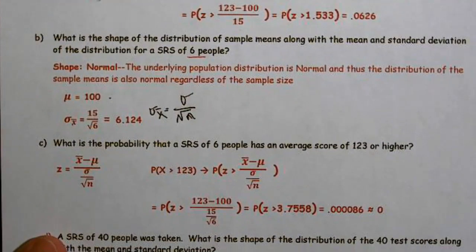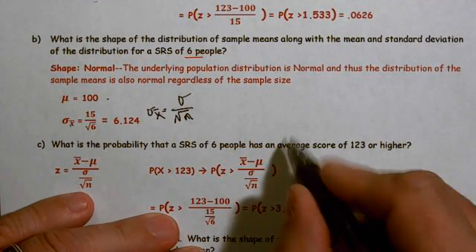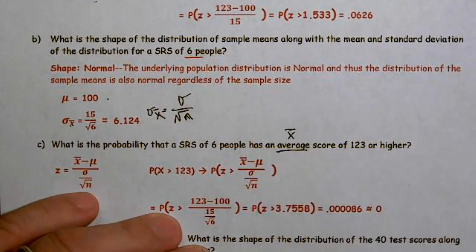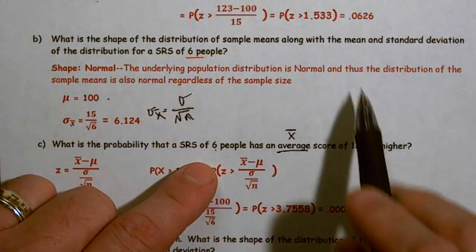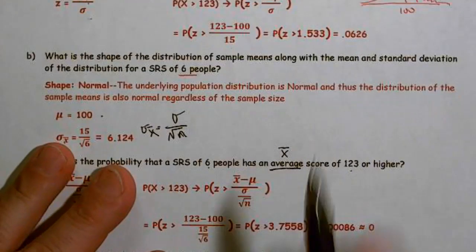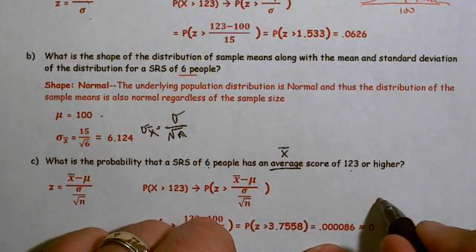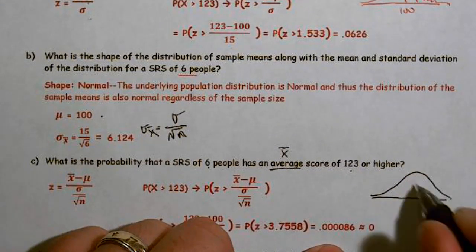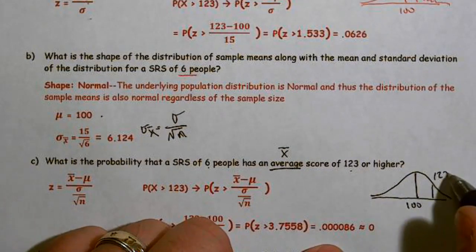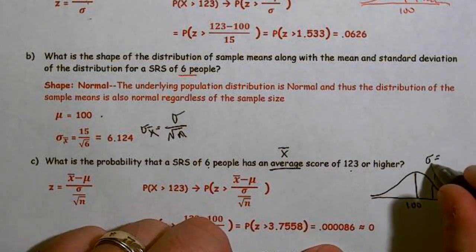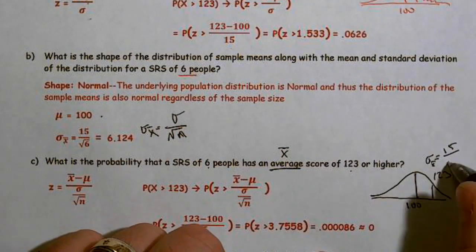Next: what's the probability of a simple random sample of 6 having an average score of 123 or higher? We're asking about the average, the x̄ values. This is exactly the same problem as Part A, except our sample size went from 1 to 6. Drawing the picture, it's the same shape — likely a bit taller — centered at 100, with 123 to the right, and the standard deviation of x̄ = 15/√6.